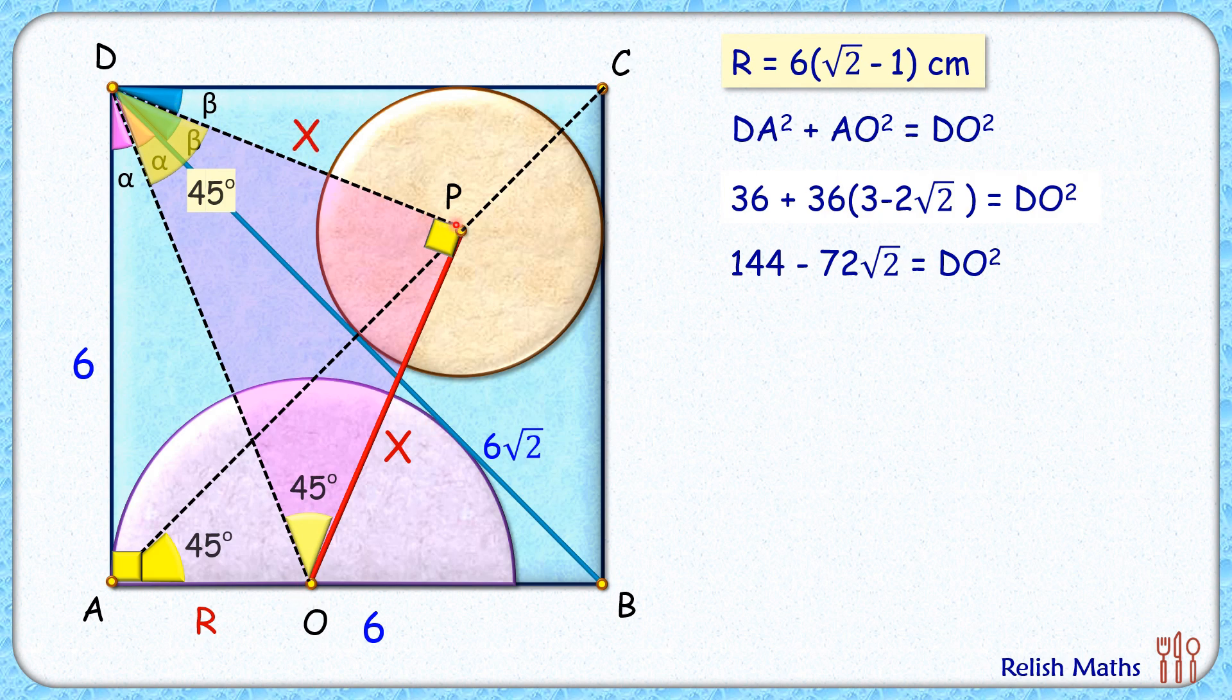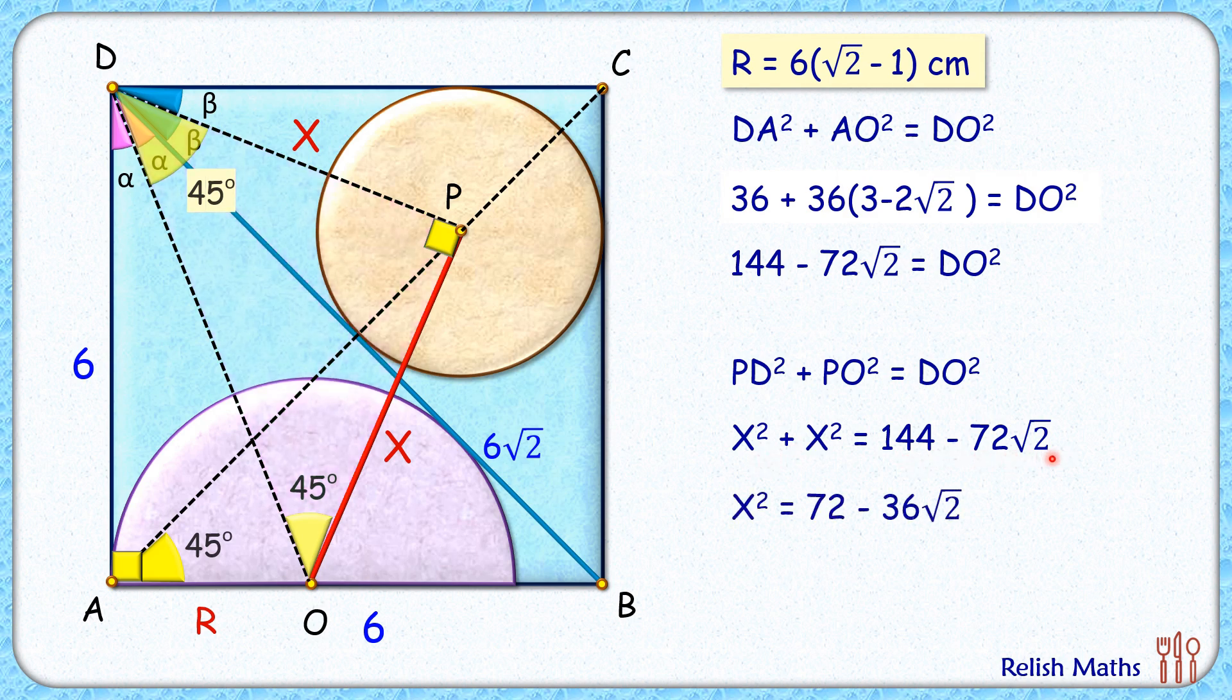Thus DP length will also be x centimeters. Applying Pythagoras theorem here and putting the values of PD and PO as x centimeters, and DO² from the first equation, we can put the value of DO². Solving, we'll get 2x² = 144 - 72√2, and dividing by 2 on both sides, taking square root, we'll get the value of x as 6 times the square root of (2 - √2) centimeters, and that's our answer.